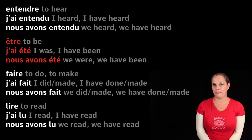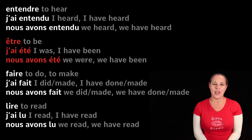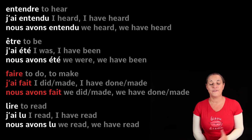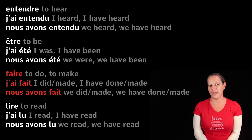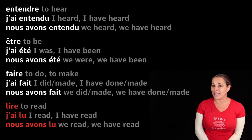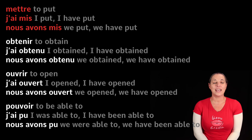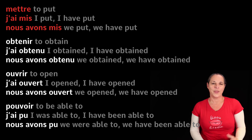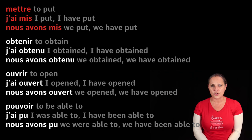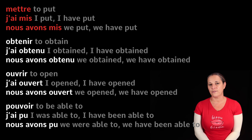Être means 'to be' — j'ai été, I have been; nous avons été, we have been. Faire means 'to do' or 'to make' — j'ai fait, I have done or made; nous avons fait. Lire means 'to read' — j'ai lu, I have read; nous avons lu. Mettre means 'to put' or 'to put on' — j'ai mis, I have put. Notice M-I-S is completely different from mettre. Nous avons mis.